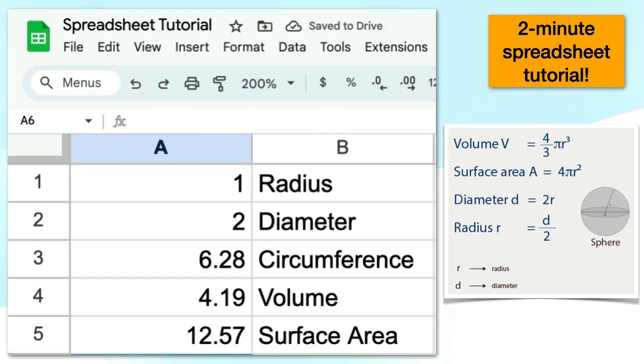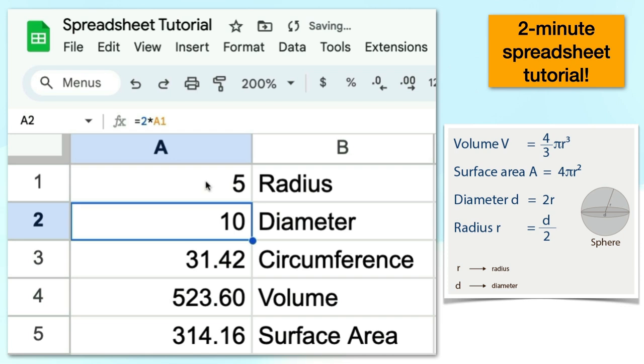Okay? Now, it computes that. Now, the nice thing is, now that we've done this whole thing, we can change the radius to, say, 5, and it will recalculate everything for us. It's pretty amazing how spreadsheets work.